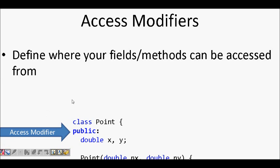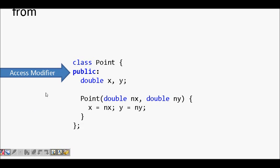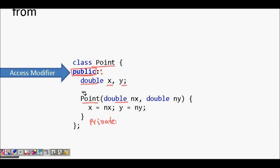Let's look at an example. We have a class called Point. We write 'public:' followed by 'double X, Y'. What this means is that whatever variables and functions are written after this access modifier — until you write another access modifier like 'private' — all of those data members and functions are considered public.